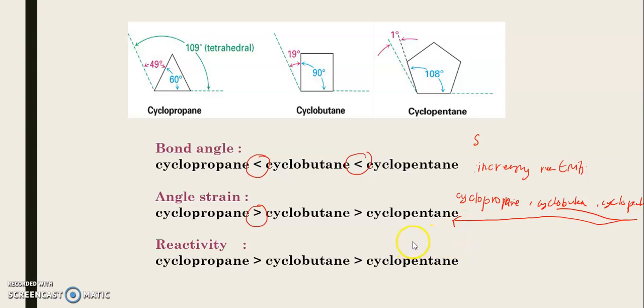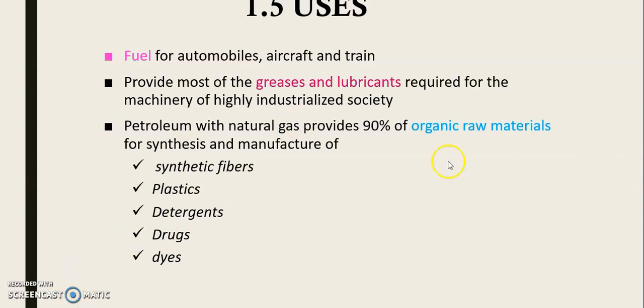The next and last section is the uses of alkane. My advice for each chapter, except chapter one, is to remember at least two uses. Uses questions are like free marks for you because this is only knowledge level. A common mistake: when we ask for uses, students answer crude oil. Crude oil is not a use of alkane - that is the source. We use fuel for automobiles, aircraft, and trains, not crude oil directly.